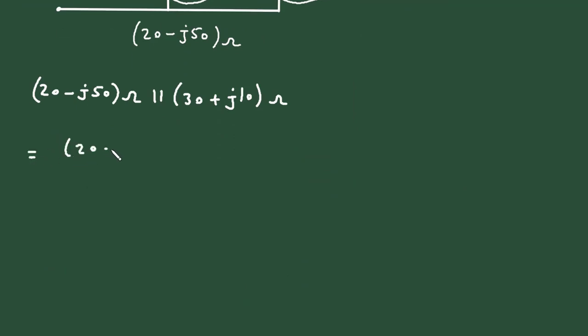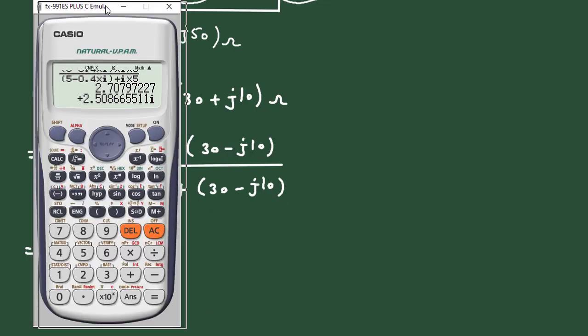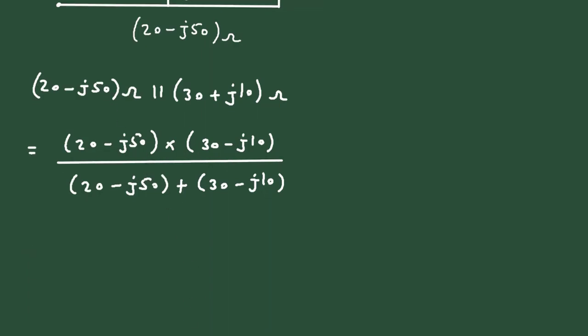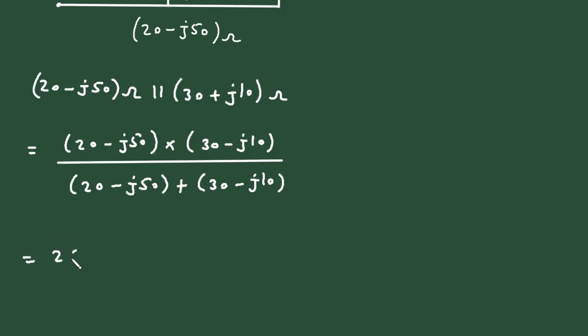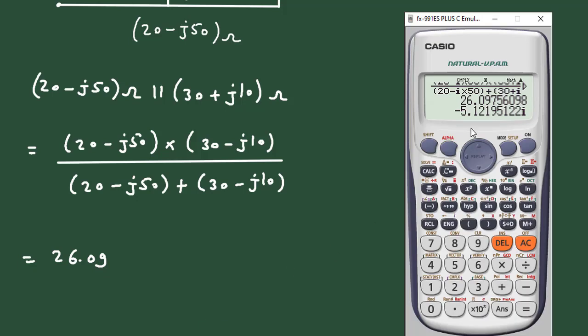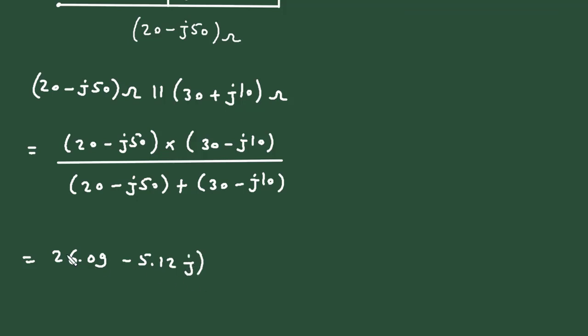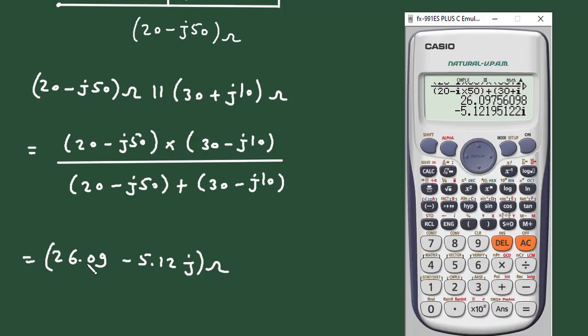So, this will be 20 minus J50 multiplied with 30 plus J10 divided by 20 minus J50 plus 30 plus J10. Let's solve this in calculator, so it is 26.09 minus 5.12 j ohm.